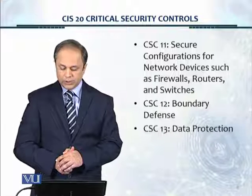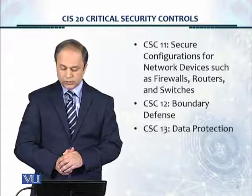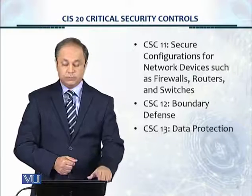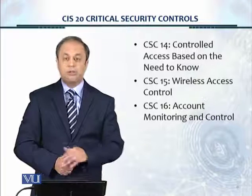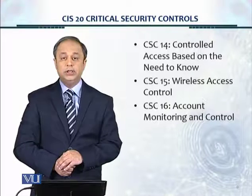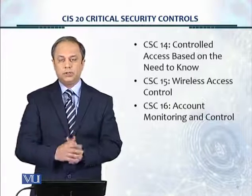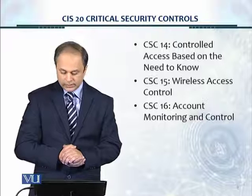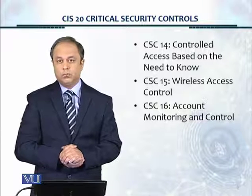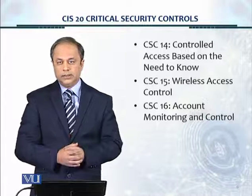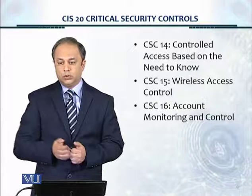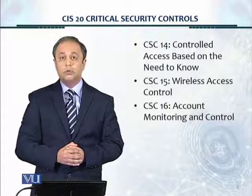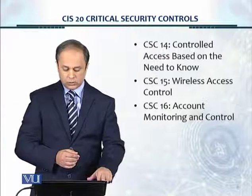CSC 11 covers secure configurations for network devices such as firewalls, routers, and switches. CSC 12 is boundary defense. CSC 13 is data protection. CSC 14 is controlled access based on the need to know, which involves restricting and classifying information and making sure that the right information is available only to the right people. CSC 15 is wireless access control — a very important area since wireless is everywhere and fairly easy to compromise. CSC 16 is account monitoring and control, which is about access control.